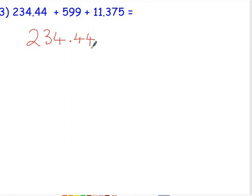So starting 234.44. If you are adding a number, so 599, we can't see where the decimal point is there because it's a whole number. Remember, the decimal point will always come at the end of the number if it is a whole number. So lining up your 599 with your hundreds, tens and units, and then we can put the decimal point after it.